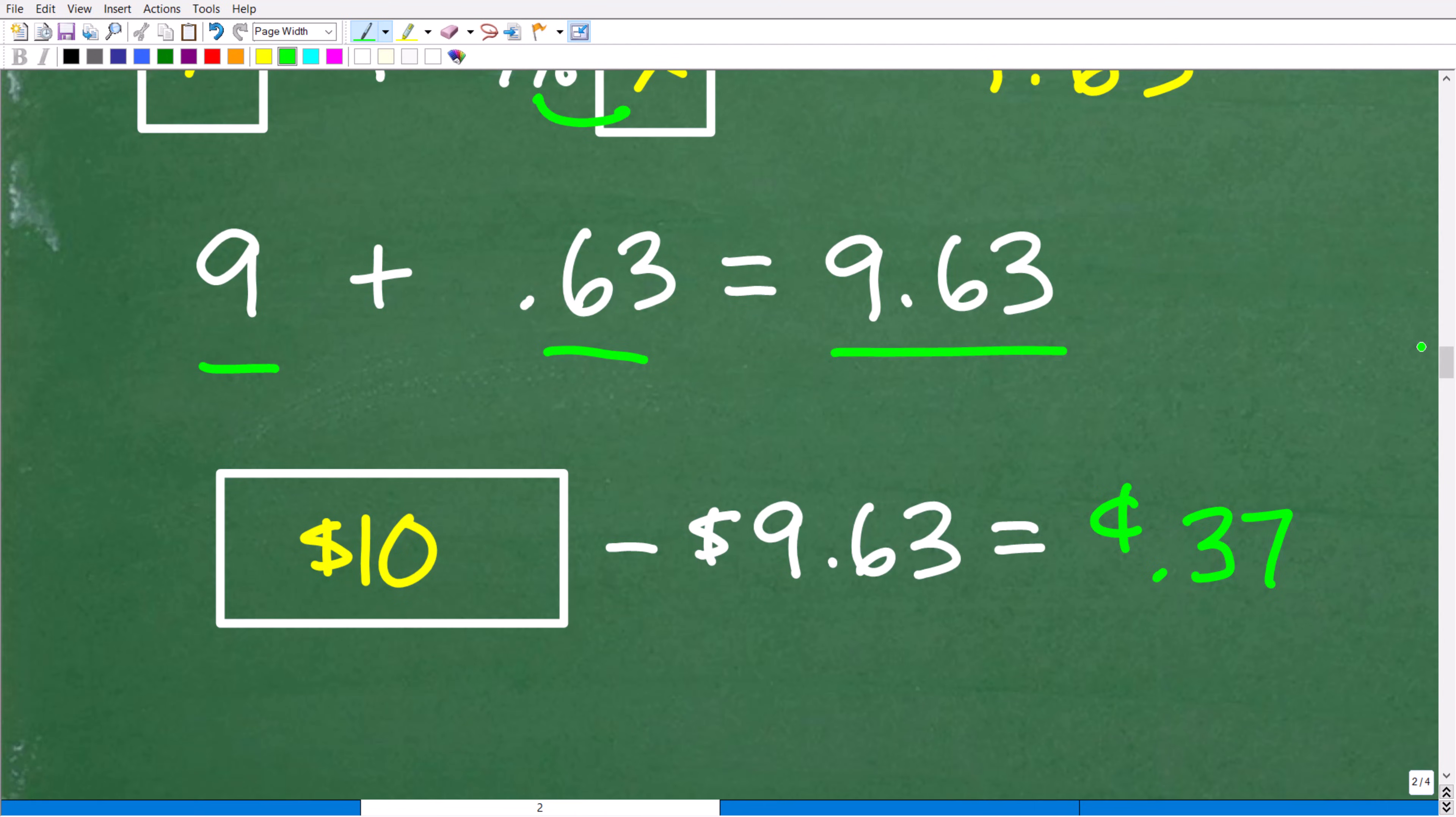So effectively, we could just kind of think of it this way, right? We went up to the cashier's stand, and the cashier's saying, that would be $9.63. No problem. I'm going to give you $10, and you're going to get back 37 cents in change.